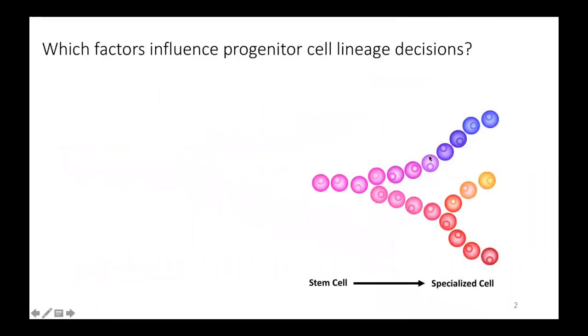In order to understand how a stem cell makes lineage decisions, we first have to consider what are all the factors that influence the fate a cell will ultimately select, and we can separate these factors into two groups.